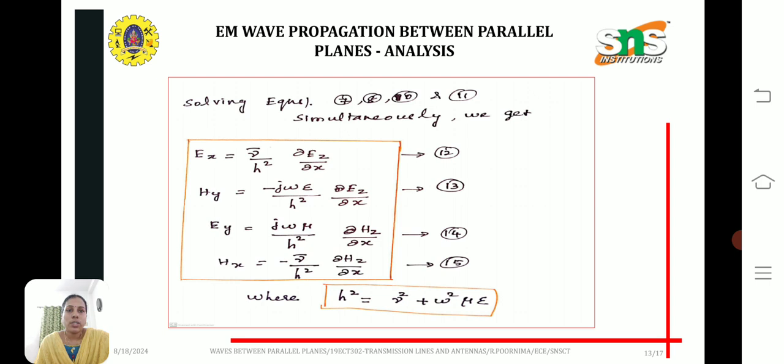Solving the equations, we get ex equal to gamma by h squared, del ez by del x, and hy, ey and hx. These are the four components of electromagnetic wave propagation between the parallel planes.